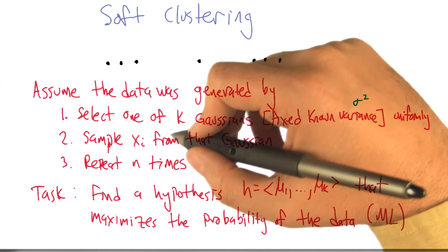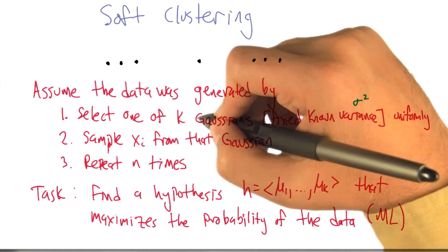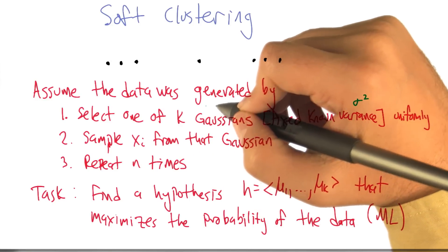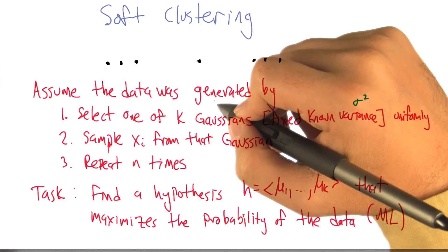And then we repeat that n times. So if n is bigger than k, then we're going to see some points that come from the same Gaussian. And if those Gaussians are well separated, they're going to look like clusters. Assuming they have very different means. That's what I mean by well separated. Yeah, exactly so.